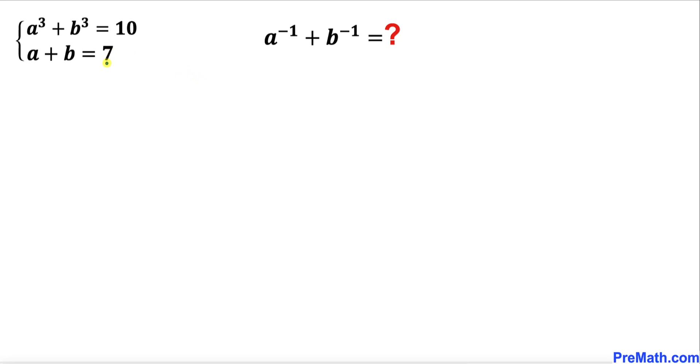In this video we have got a system of two equations: a³ + b³ = 10 and the second equation is a + b = 7. Now we are going to find the value of a⁻¹ + b⁻¹.